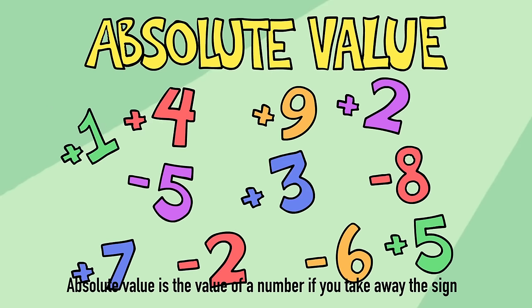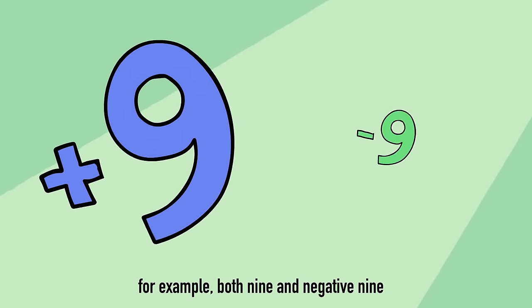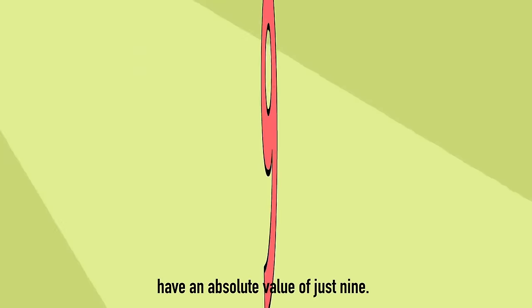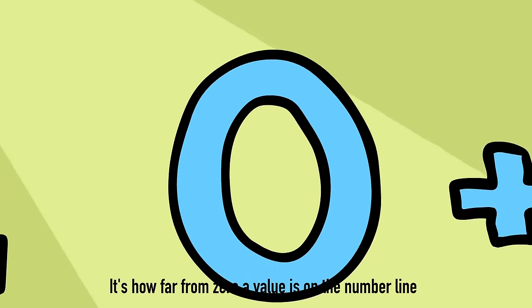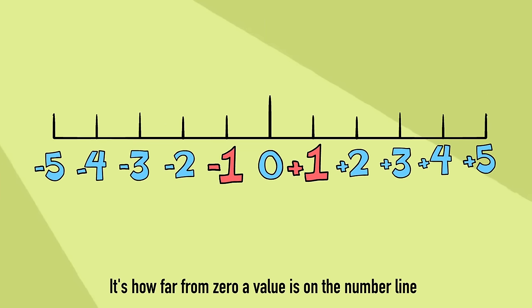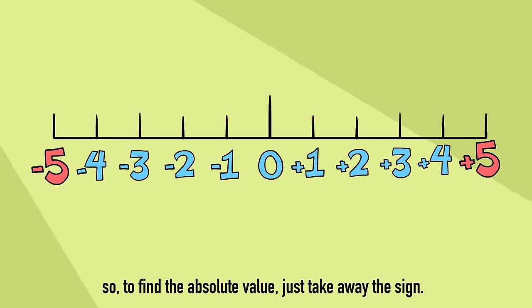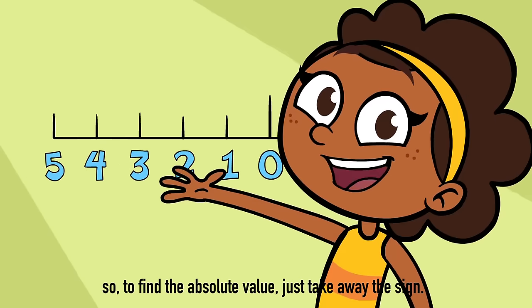Absolute value is the value of the number if you take away the sign. For example, both nine and negative nine have an absolute value of just nine. It's how far from zero a value is on the number line. So to find the absolute value, just take away the sign.